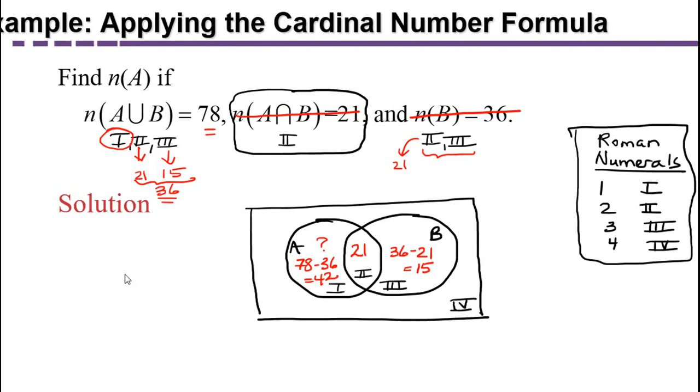And the question was asking us how many are in set A. Well, the number in A is going to be the number in region 1, which is 42, plus the number in region 2, which is 21, which adds up to 63, which is the same result we got using the cardinal number formula.